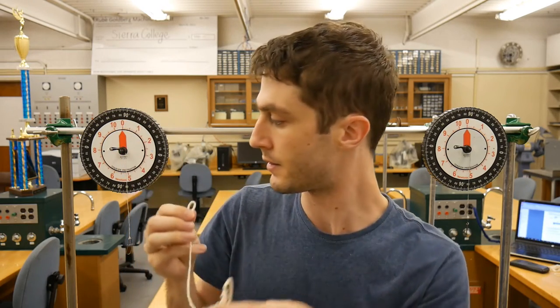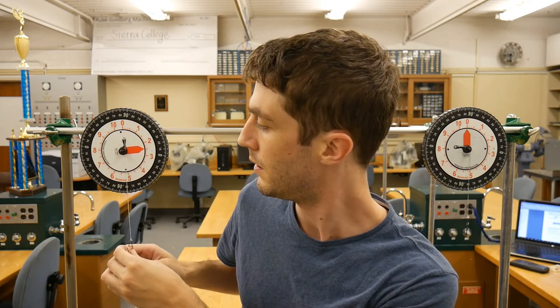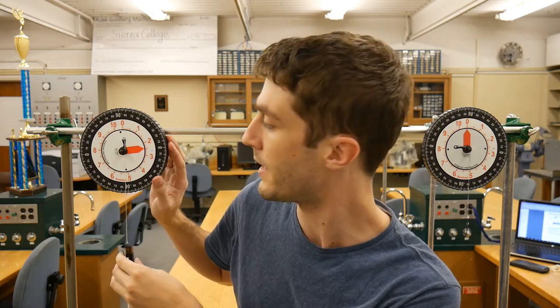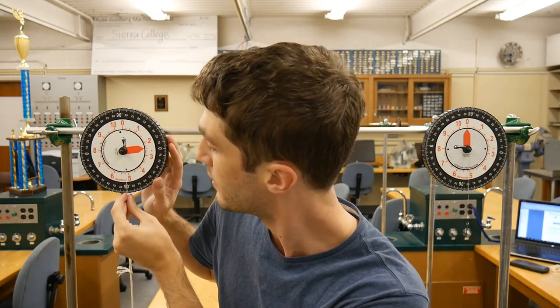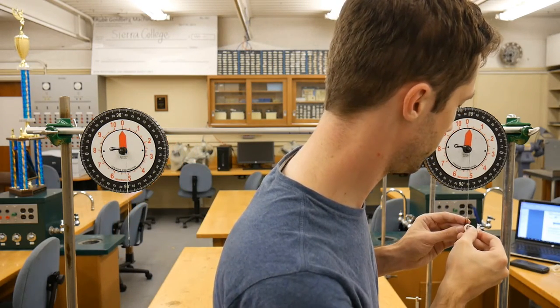Then do the same for the other scale. We should also make sure that the angles that we're reading are accurate. To adjust the angle, take a mass and string, and hang it from the scale, and then merely adjust the outer rim such that it lines up with 90 degrees. Do this for both scales.